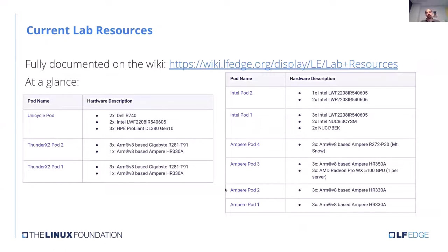Looking at the hardware diversity available in the lab: there are both x86 and ARM64-based systems, with different generations of chips — including older and newer Ampere systems. Server vendors include Dell, Intel, HPE, Gigabyte, and Lenovo. This diversity helps facilitate the different BMC interfaces you may need and gives you the ability to pick resources best suited to your work. All resources are documented in the wiki with more detail than what's shown here.